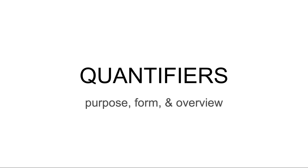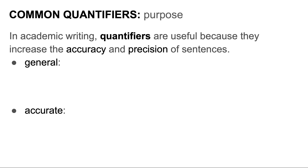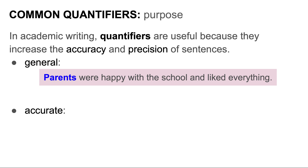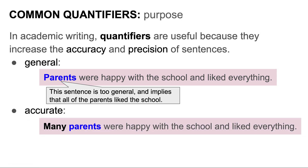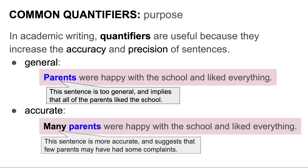Now let's look at the purpose and form of quantifiers. What is the purpose of a quantifier? In academic writing, quantifiers are useful because they increase the accuracy and precision of sentences. For example, the sentence 'parents were happy with the school and liked everything' is too general and implies all parents liked the school. A more accurate sentence using a quantifier would be: 'Many parents were happy with the school and liked everything.' This is more accurate and suggests that few parents may have had complaints.